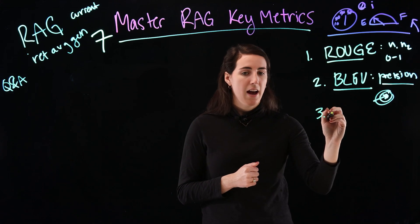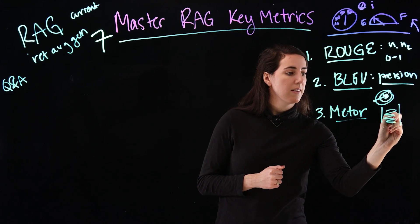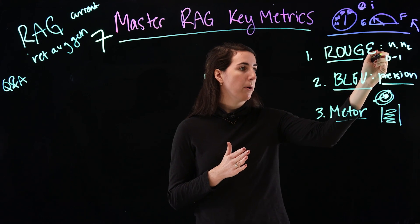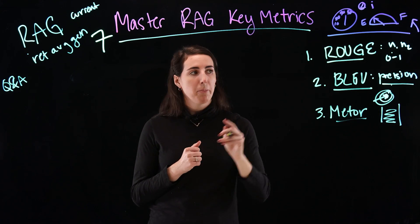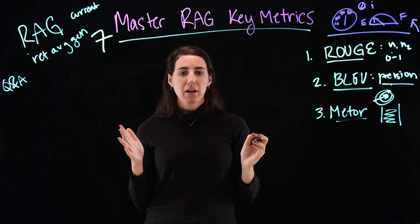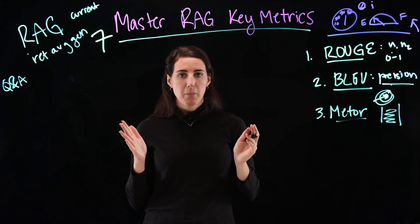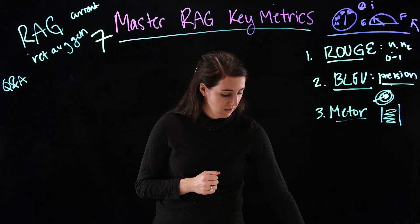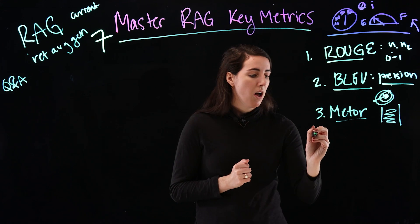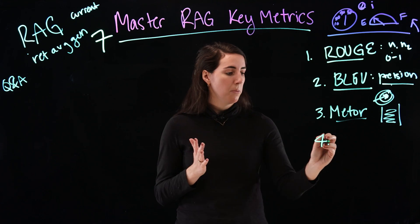Next, we have our METEOR score. This is going to give us an average of both precision and recall from our first and second metrics. This is a great way to get a more well-rounded score for your model and how the model is performing. Now we're going to move on to our next section, which is all about the content of information that you're putting into your model.